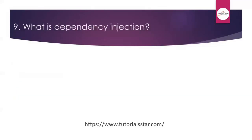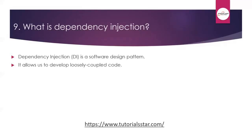The next question is: what is dependency injection? Dependency injection is also included in the .NET framework. It is a software design pattern that allows us to develop loosely coupled code. Dependency injection is a great way to reduce tight coupling between software components and enables better management of feature changes and complexity, making code more maintainable. There are two types of coupling: tight coupling and loose coupling, and we need to consider this when implementing dependency injection.